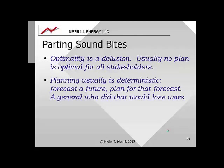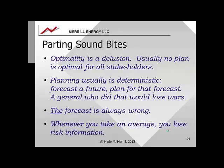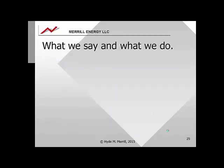Second: planning usually is deterministic — we forecast the future and then plan for that future. A general who did that would lose wars. The forecast is always wrong; to worry about one forecast and not look at alternative possibilities is a mistake. Finally, whenever you take an average or calculate an expected value, you lose information about risk.